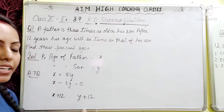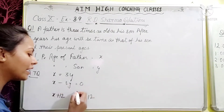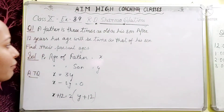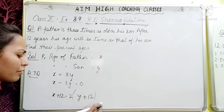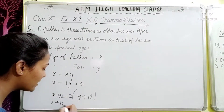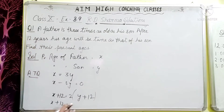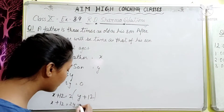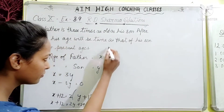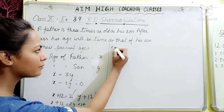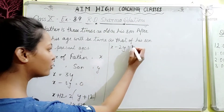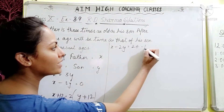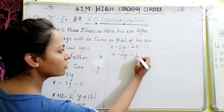For the second equation, son's age multiplied by 2 gives father's age after 12 years. So x + 12 = 2(y + 12), which simplifies to x + 12 = 2y + 24. Rearranging: x − 2y = 12. This is equation number 2.